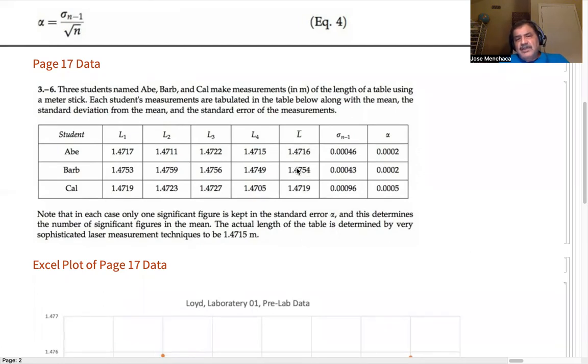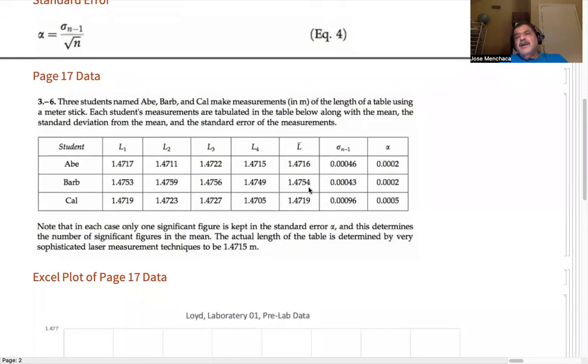Barb, well, she's a little high on her measurements. Cal is pretty close, but he's the one with the large standard deviation. So let's see what this looks like on a graph.